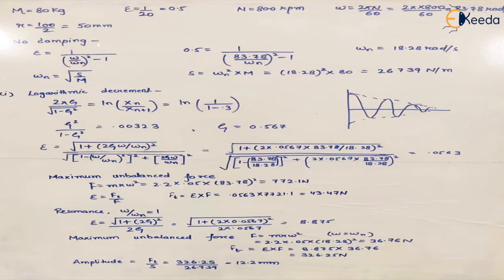So we have written all the given data. It is given that 1/20th of the impressed force is transmitted, so epsilon becomes 1/20, which is 0.05. We are given N, so we can calculate omega which is 2π N upon 60. The value of stroke is also given.